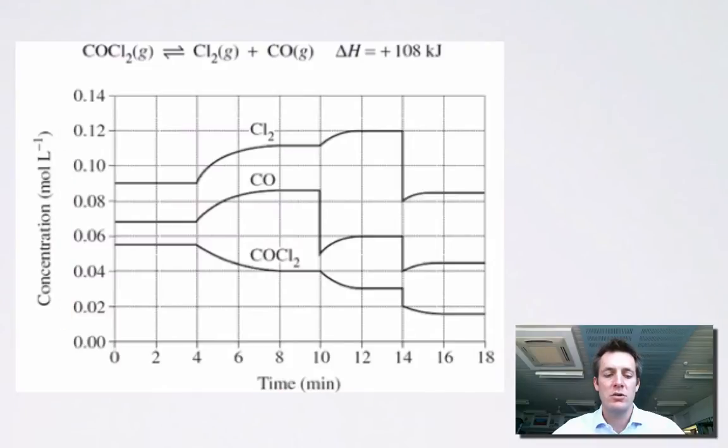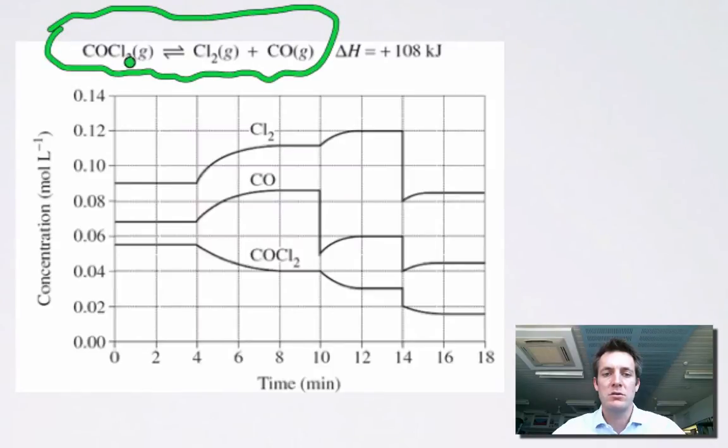And this shows we've got a reversible reaction system here with COCl2 turning into Cl2 and CO reversibly. And what this graph does is it plots the concentrations of the three species that are in the equation there.